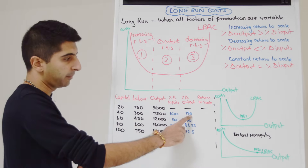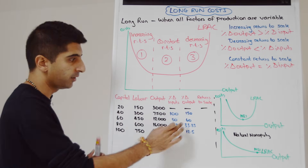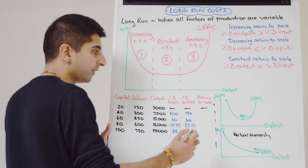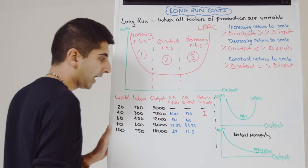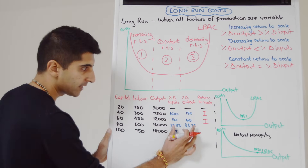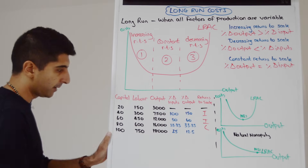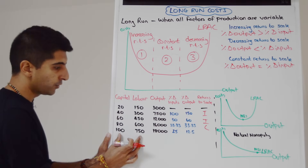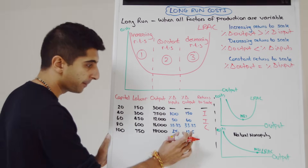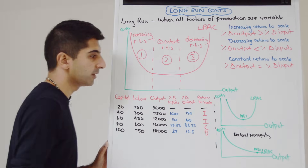For the first increase in inputs from 170 to 340, the percentage change in output is greater than the percentage change in input, so this business is experiencing increasing returns to scale — same for the next increase. But for the following increase the two are equal, giving constant returns. Then from 680 through to 850, the percentage change in output is smaller than the percentage change in input, so this is decreasing returns to scale.